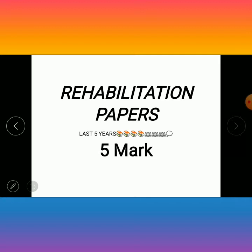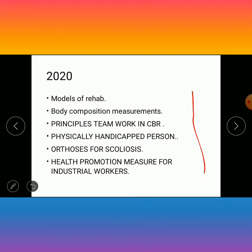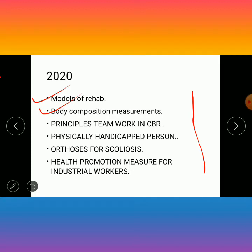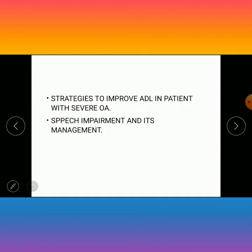In the year 2020, the questions asked in the exam were: models of rehabilitation, body composition and its measurements, principles of teamwork in CBR (community-based rehabilitation), short note on physically handicapped persons, orthosis for calluses, health promotion measures for industrial workers, and strategies to improve ADL (activity of daily living) in patients with severe OA (osteoarthritis).